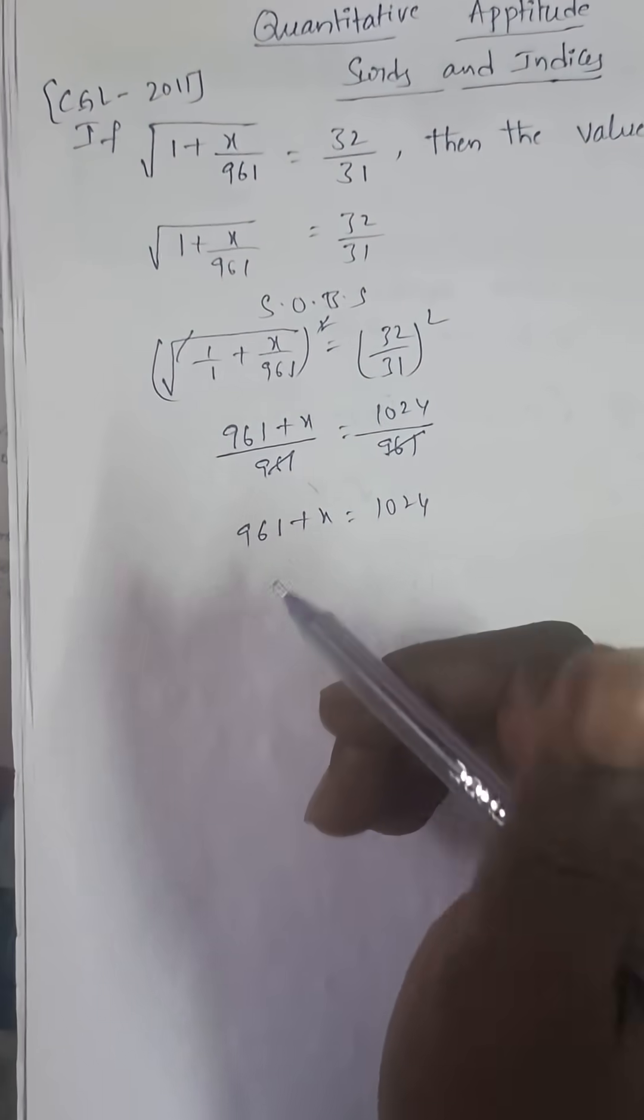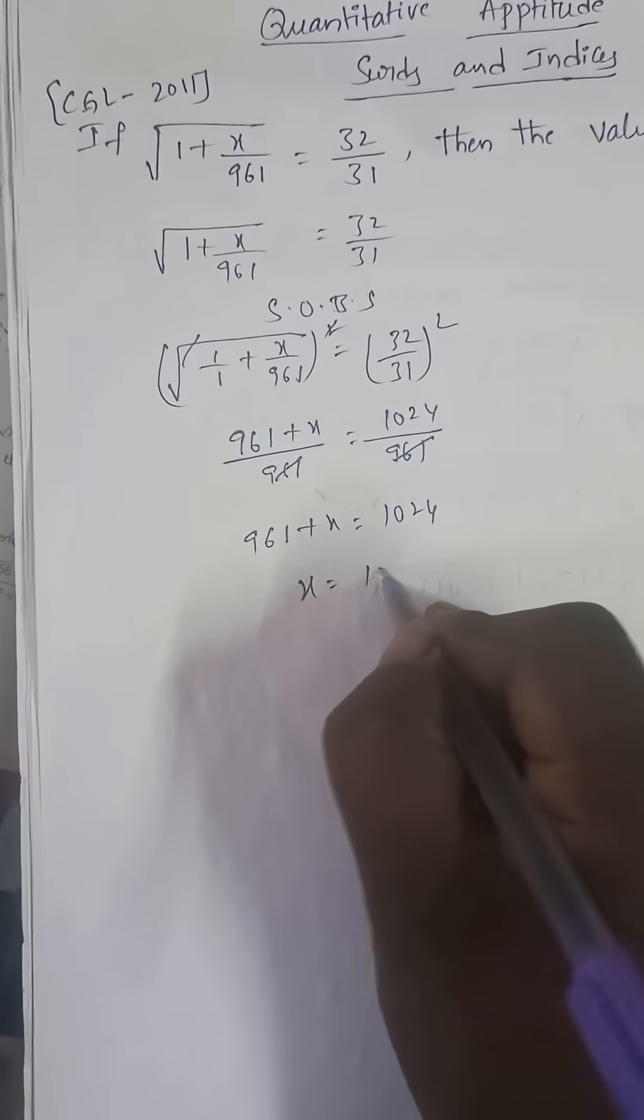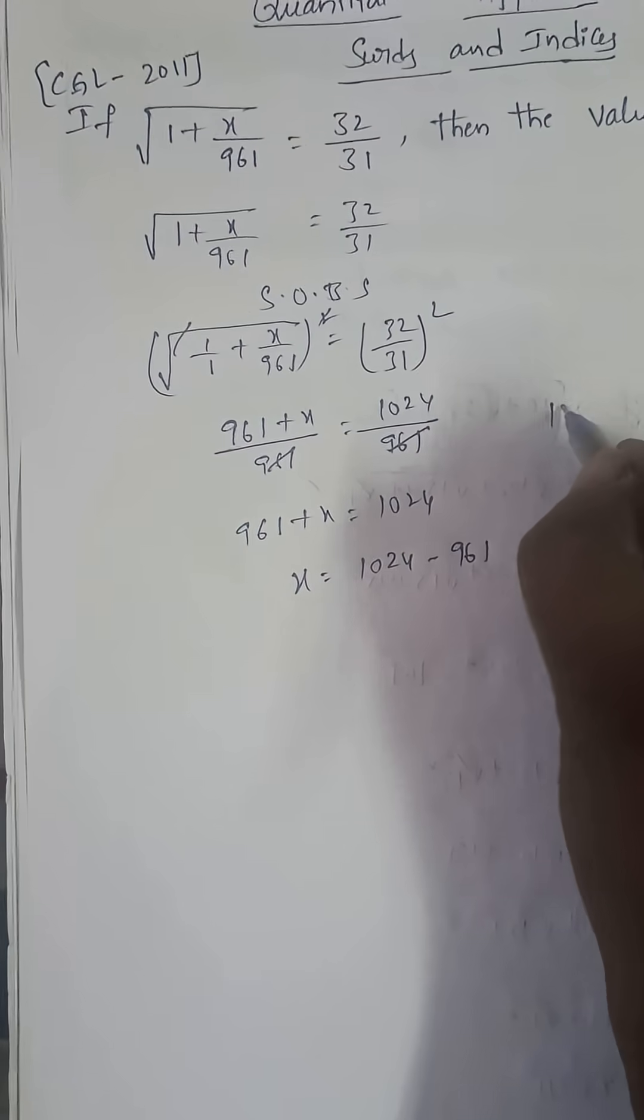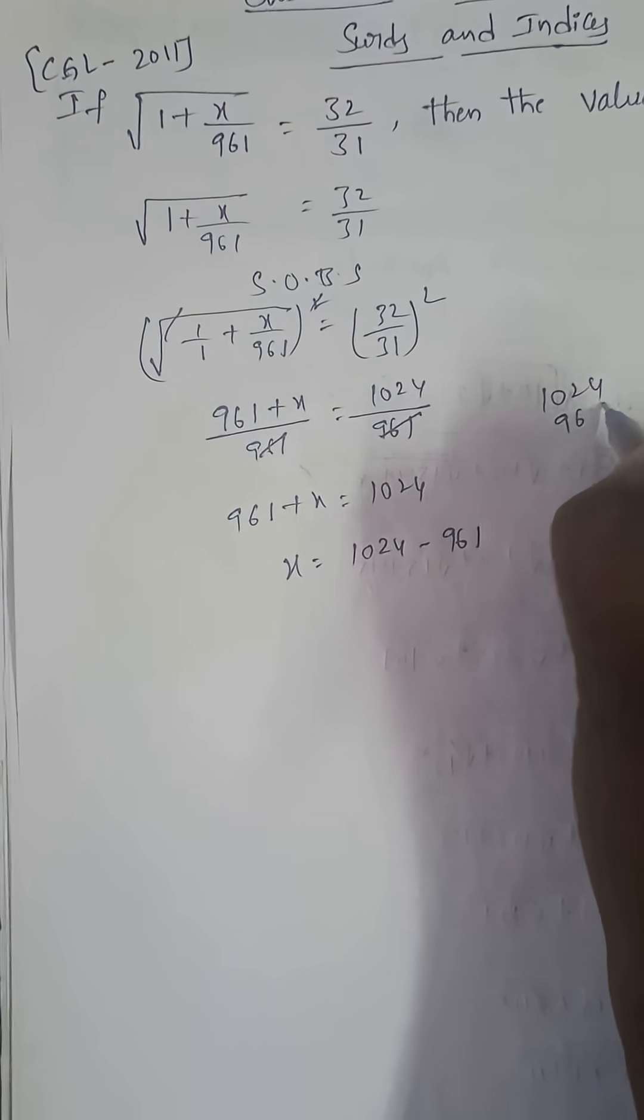Plus 961 cancel, minus. x is equal to 1024 minus 961. So, 1024 minus 961.